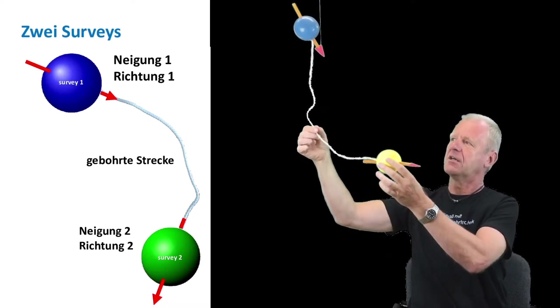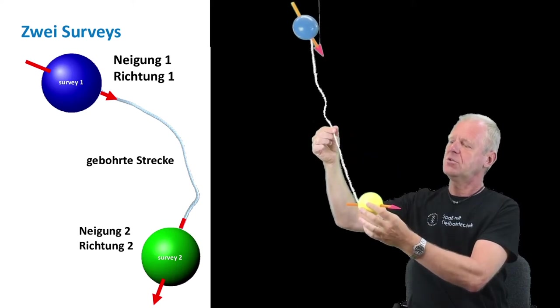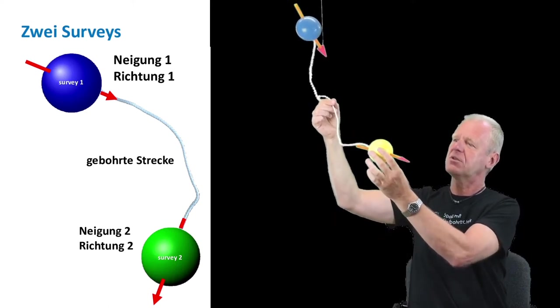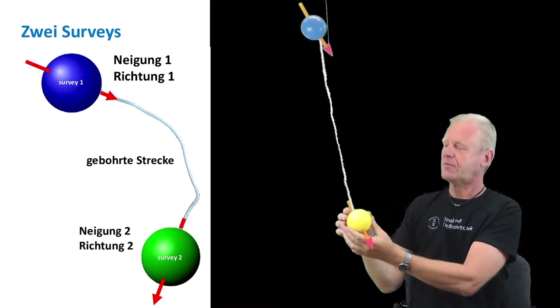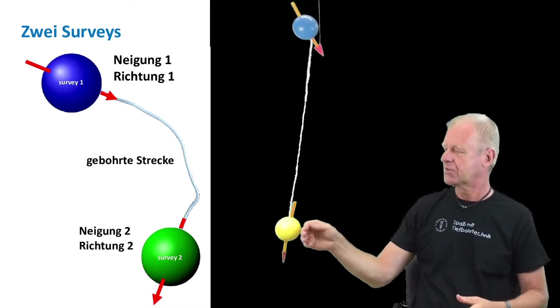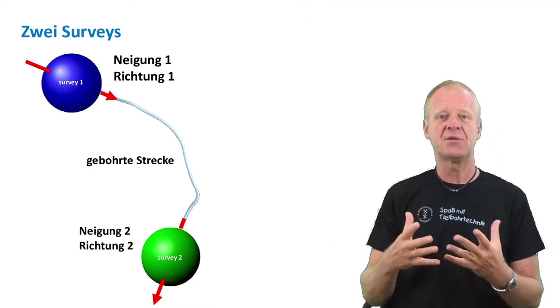We do not know the well path between the two surveys, whether it is straight or circular or random or curved. But depending on the assumption we take for the well path, the lower yellow ball will always end up in different positions relative to the blue ball, indicating a different vertical depth for our well.